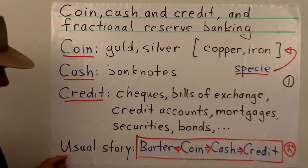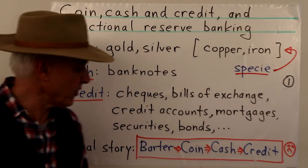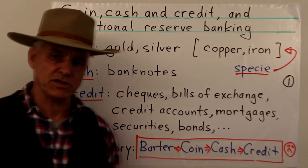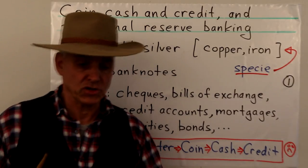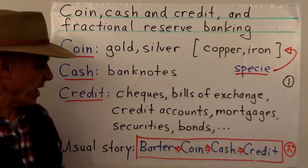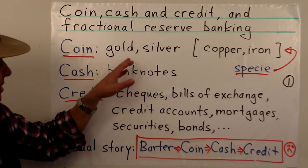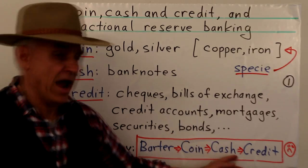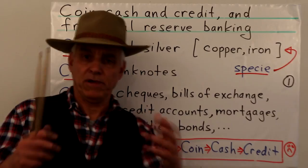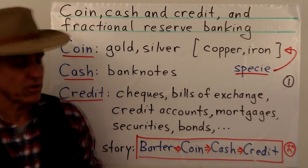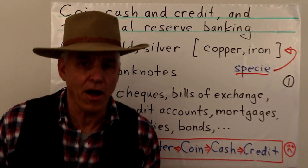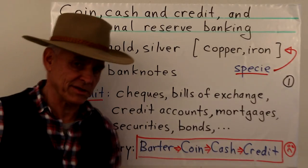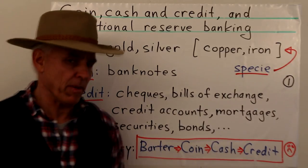The usual story you learn in economics courses is that there's a kind of progression. It probably starts before our time in earlier civilizations, which were supposedly based on barter — where I exchange my three goats for your cow. Then gradually we move to using metals, i.e. coin, as a medium of exchange. Then much later cash is introduced, and in modern times credit plays a more and more important role. This is the standard story, but it's almost surely quite wrong — and it has in fact been mostly discredited, though economics books still more or less rely on it.